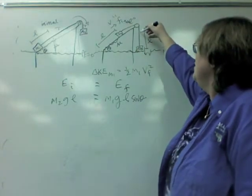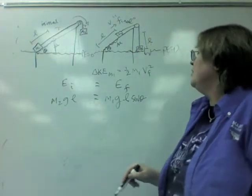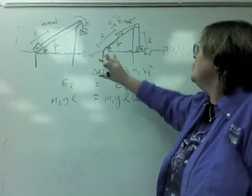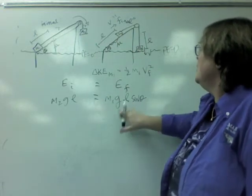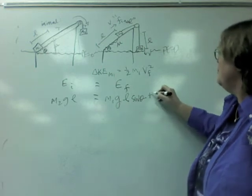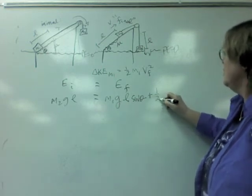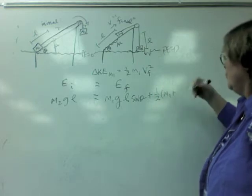So, that's how much potential energy M1 will have. M2 will lose all its potential energy. That's what's converting the system into motion, giving M1 potential energy, giving both masses